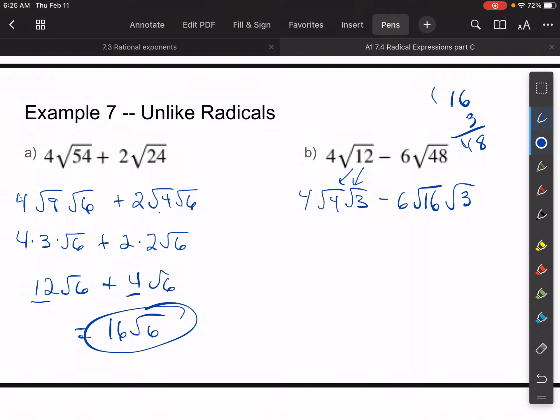So we'll do 6 × √16 × √3. So when I do this, 4 × √4, that's 4 × 2, which is 8√3. 6 × √16 is 6 × 4. 6 × 4 is 24√3. These are like terms, so I can combine them. 8 - 24 gives me -16√3. So the big idea is simplify, and then if there's like things, combine them.